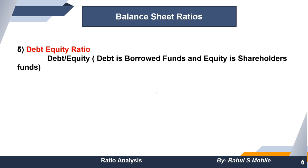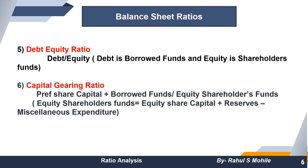So we have covered balance sheet ratios: current ratio, liquid ratio, stock working capital ratio, proprietary ratio, debt equity ratio, and capital gearing ratio. Capital gearing ratio formula: preferential capital plus borrowed funds, divided by equity shareholders' funds. Equity shareholders' funds = equity share capital + reserves − miscellaneous expenditures. These are all the balance sheet ratios.